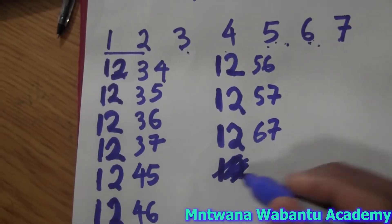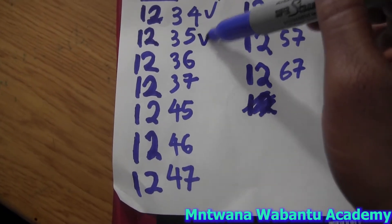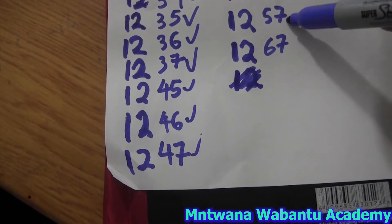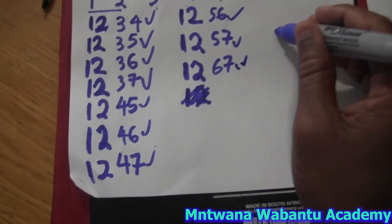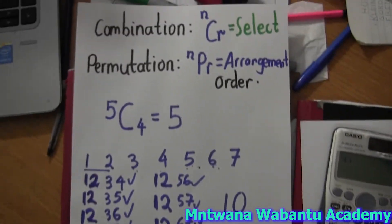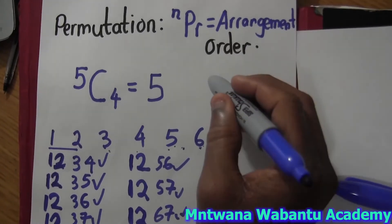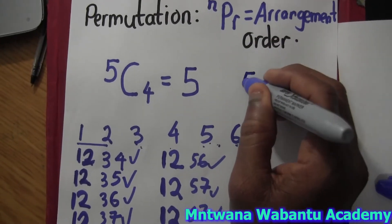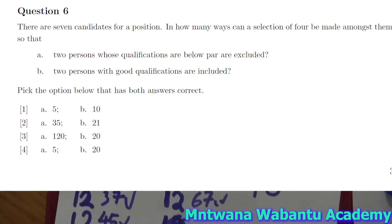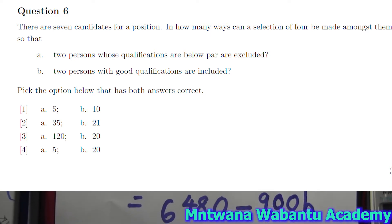Let's count how many we have: one, two, three, four, five, six, seven, eight, nine, ten. The answer is ten. So the second part gives us ten. From this we have five and ten as our answers, and that is option one. It's easy like that.